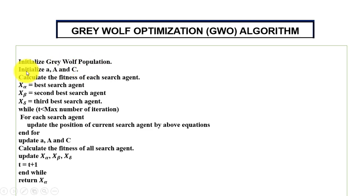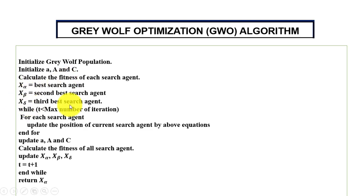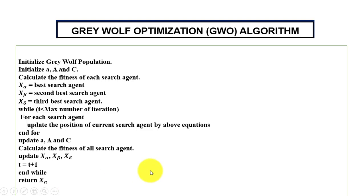To summarize: we initialize the population, initialize coefficient vectors, compute fitness using the fitness function, choose alpha/beta/delta, check the condition, update positions, calculate fitness, update alpha/beta/delta, increment the counter, and finally return the position of the alpha wolf. That's all about this video — if you have any questions, comment below. Thanks for watching!